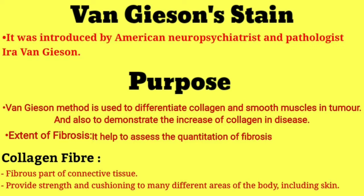Now we will discuss the purpose of Van Gieson's stain. The Van Gieson method is used to differentiate collagen and smooth muscles in tumors, and also to demonstrate the increase of collagen in diseases.